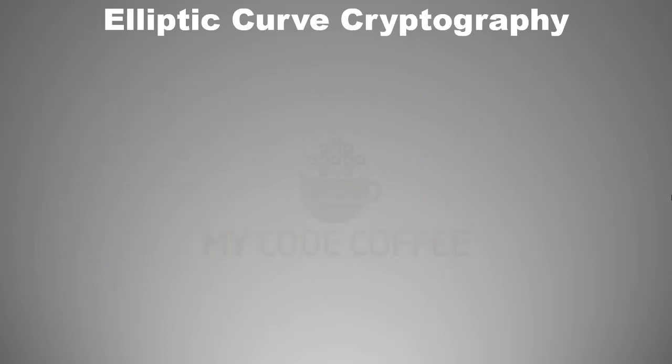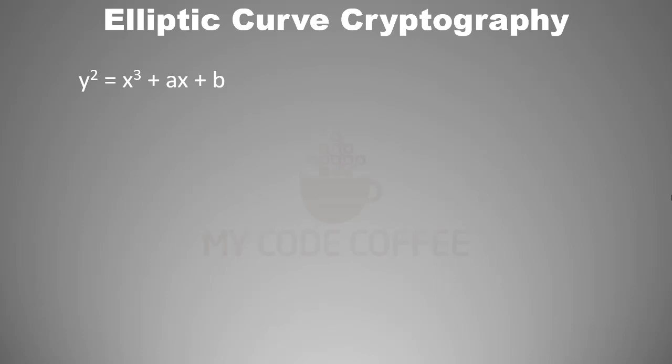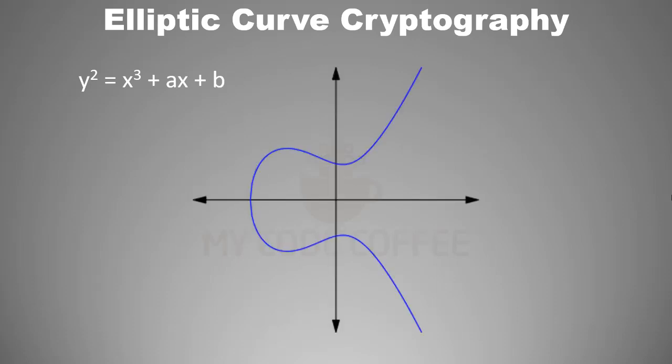You must be knowing that you can represent a mathematical equation in a graph. For example, y equals to mx plus c is the equation of a straight line. Similarly, y squared equals to x cubed plus ax plus b is the equation of an elliptical curve.